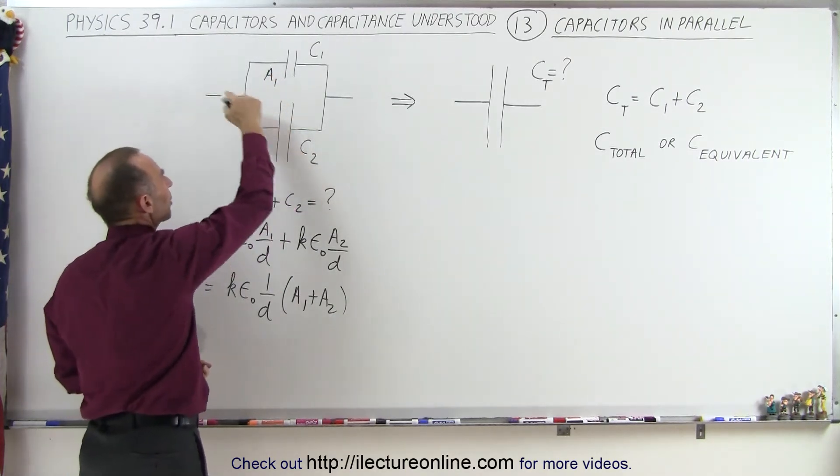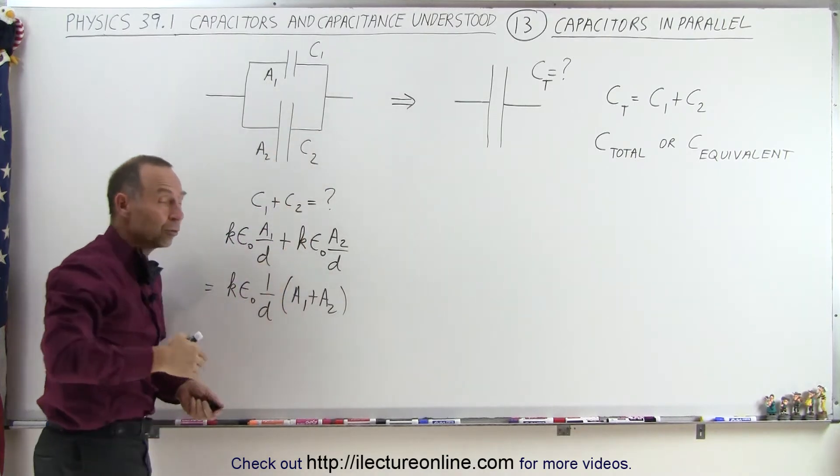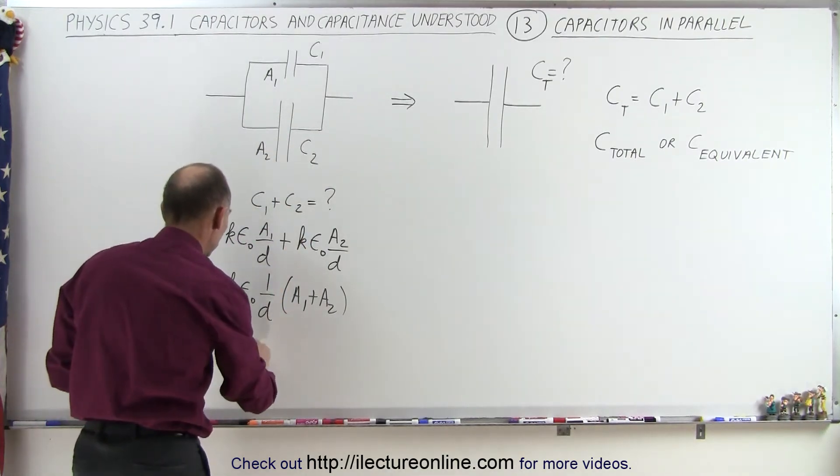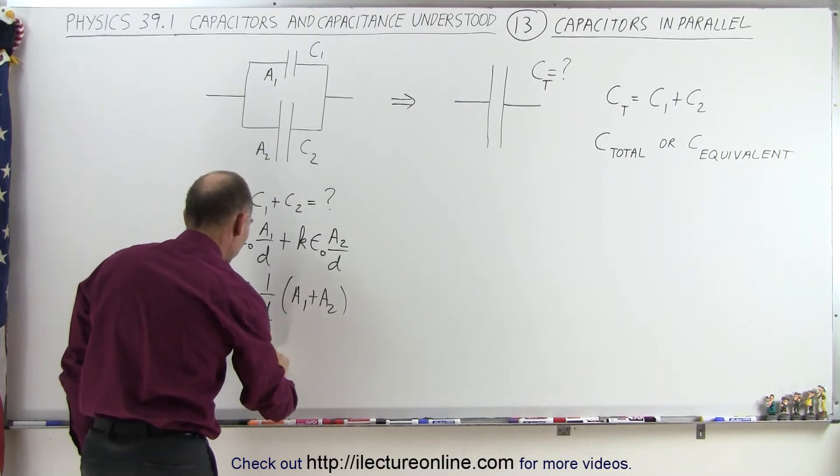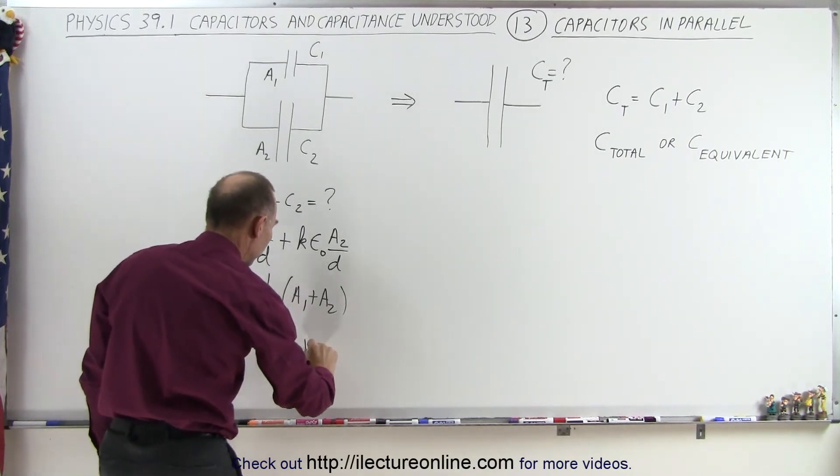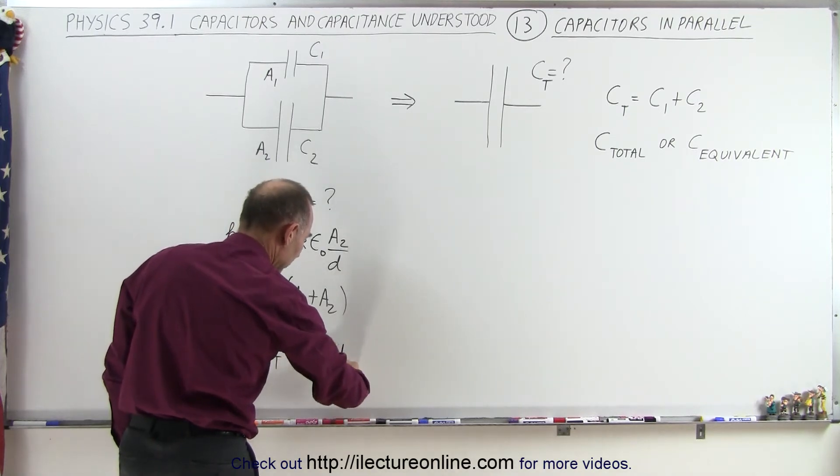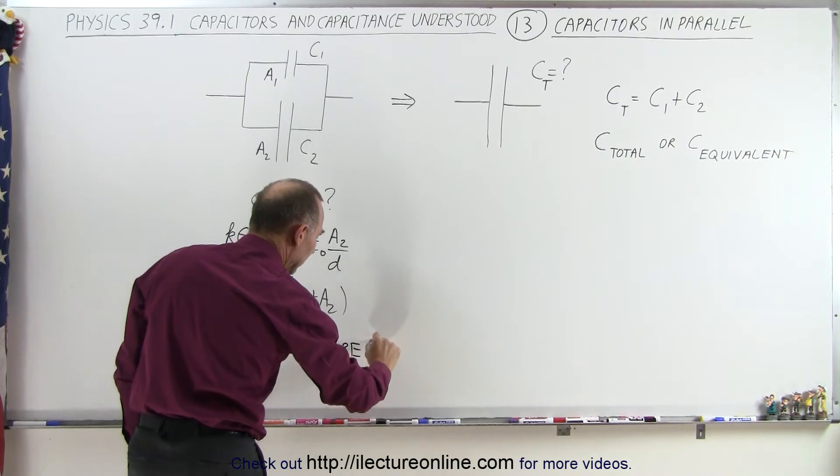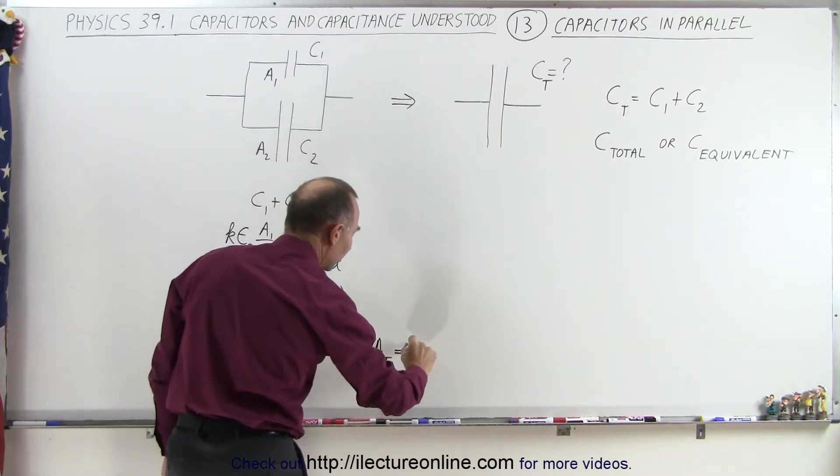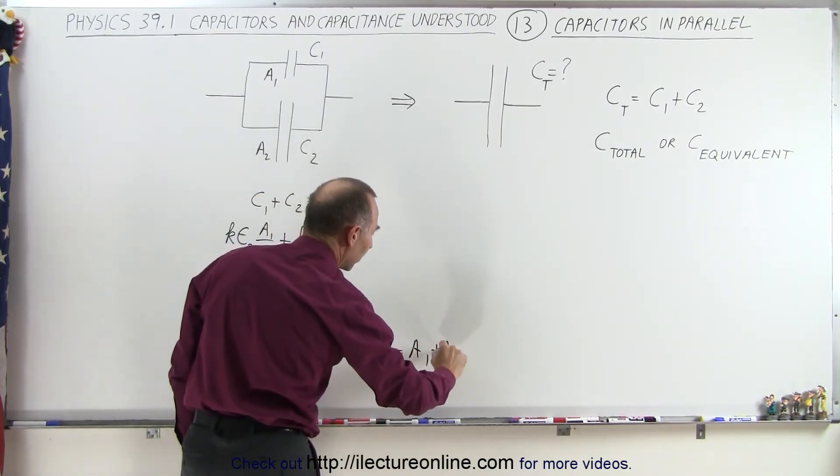the charges can go here or there—they don't care. So ultimately this is simply equal to the total capacitance, C total, where the area of the total capacitance (and that should be an E not an A) where the total area is simply the sum of A1 plus A2.